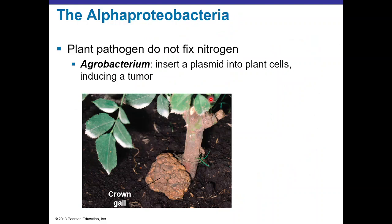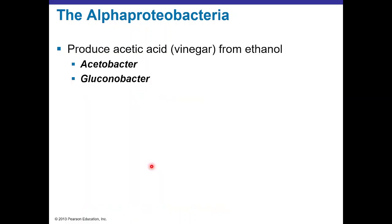Agrobacterium also lives in plant roots but is pathogenic. It injects a plasmid into root or stem cells, forming tumors called crown galls — not beneficial for the plant. Other Alpha Proteobacteria are used in the food industry: Acetobacter and Gluconobacter can convert ethanol into vinegar or acetic acid.